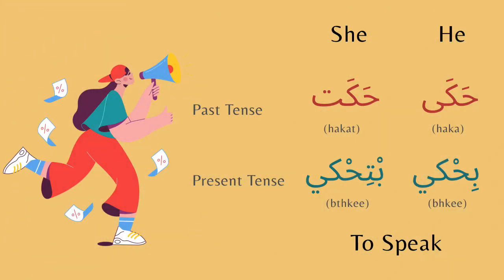The next verb is to speak. For the past tense, for he you would say haka. For she it's hakat. For the present tense, for he it would be bihke. For she it would be btihke.